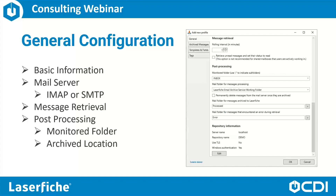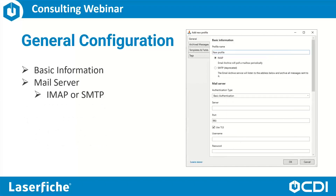When we configure our mail server, we can choose either basic authentication or Microsoft 365 OAuth 2.0 authentication if we are connecting to an Office 365 mailbox. If you are connecting to a Gmail mailbox, there is some additional configuration required to allow basic authentication, and those steps are outlined in the help documentation for Email Archiver.